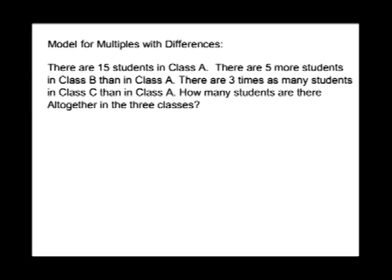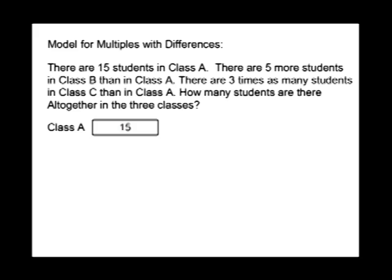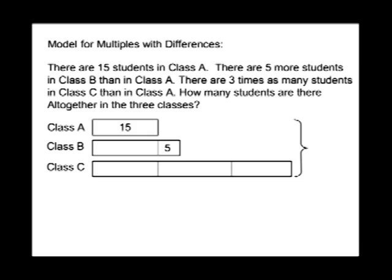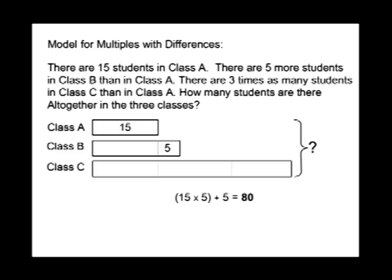In this example, we're going to model multiples with differences. There are 15 students in class A. There are five more students in class B than in class A. There are three times as many students in class C as in class A. Class B is represented as five more than class A, and class C as three times class A. We have 15 times five parts, then add an additional five for class B. So 15 times 5 plus 5 equals 80 students altogether in the three classes.